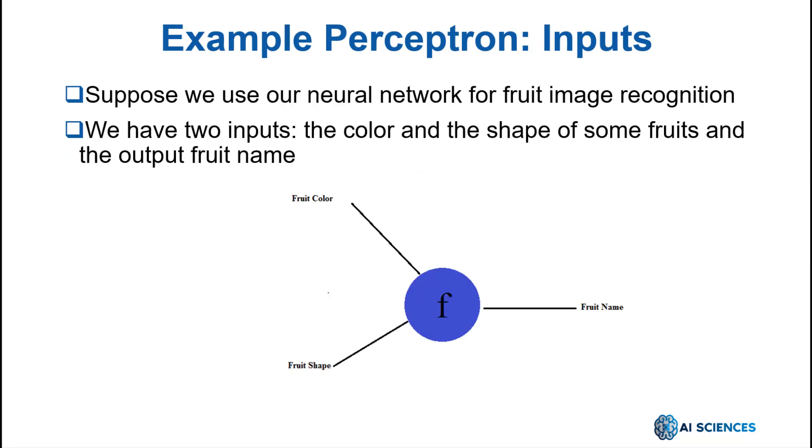So, suppose we use our neural network for fruit image recognition. I have two inputs for that purpose: the color and the shape of some fruits in our data sets, and a single binary output, which is the fruit name. Once the machine has learned all these properties, I can give it a new image of a fruit, one it hasn't seen before, and it will hopefully classify it correctly and be able to tell me whether it is an orange or a banana.